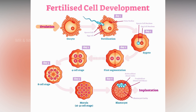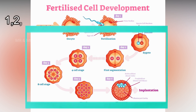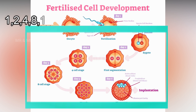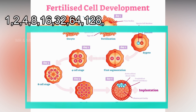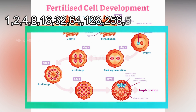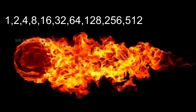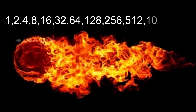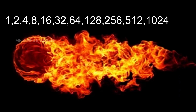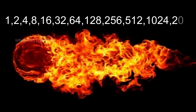1 is 2, 2 is 4, so 4 is 8. Now, 8 into 2 is 16, 16 into 2 is 32, 32 into 2 is 64. That means all the numbers are single digits.